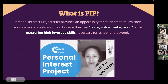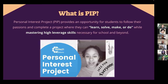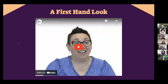We're going to look at something called a PIP — a personal interest project — and explore the role of generative AI around it. For us, a PIP is a personal interest project where students learn, solve, make, or do something, and in doing that very often hit those high-leverage skills: communication, collaboration, and problem solving. Let's watch a short video that gives you some background — sometimes it's easier to hear from students and teachers what this style of learning is all about.